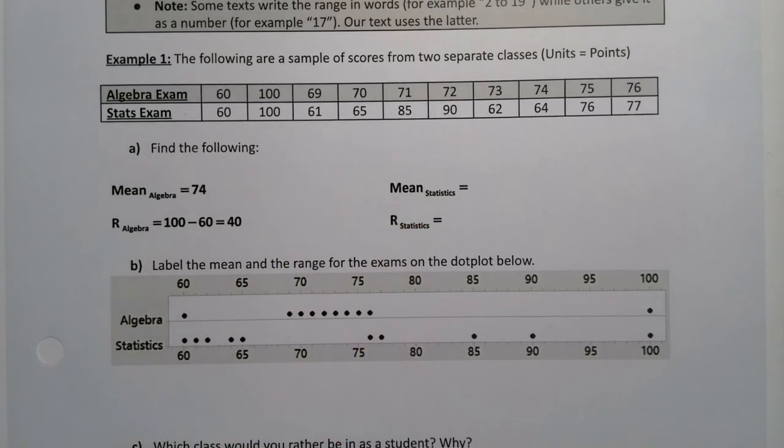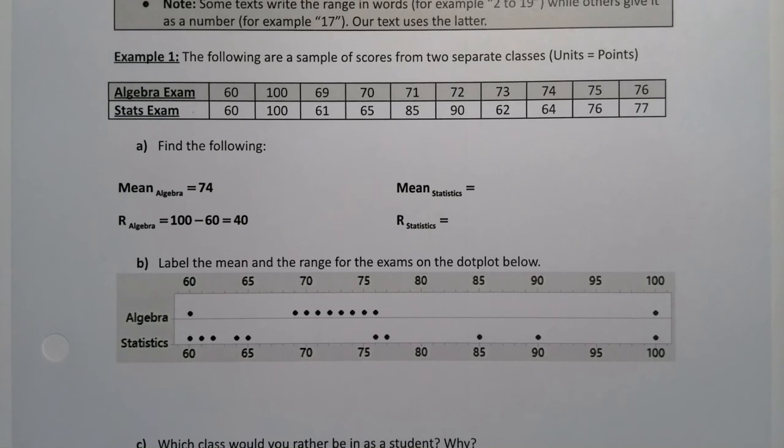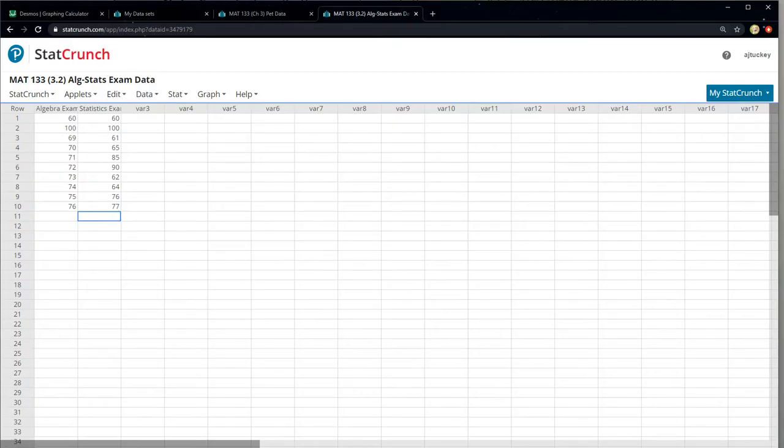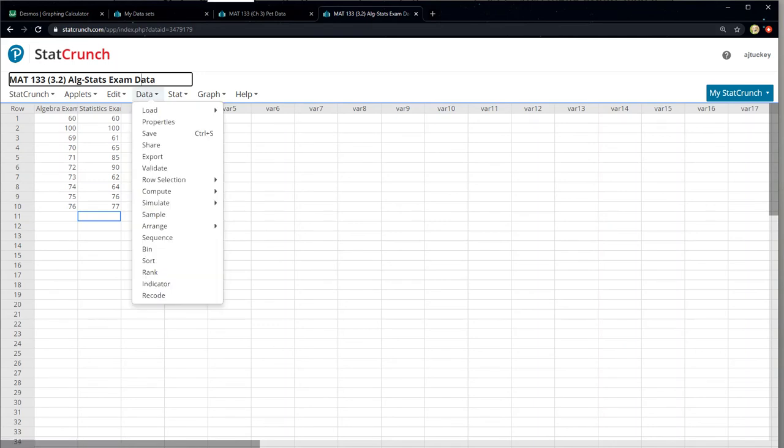As a matter of fact, if I use StatCrunch, I can find both at the same time. So let's go to StatCrunch. And if you're interested, I'll have this as MAT 133 3.2 Alge stats exam data. So if you just kind of look that up, you'll find it.